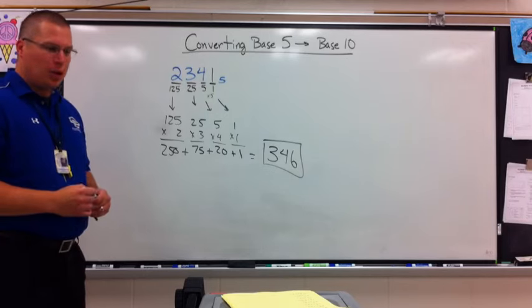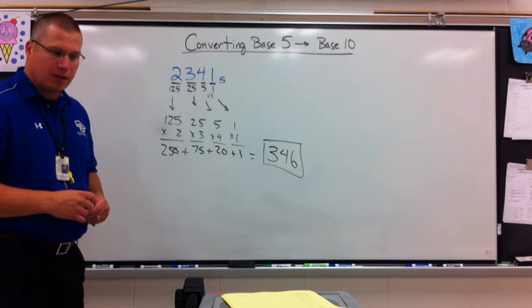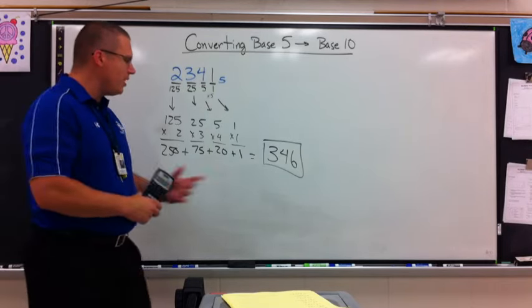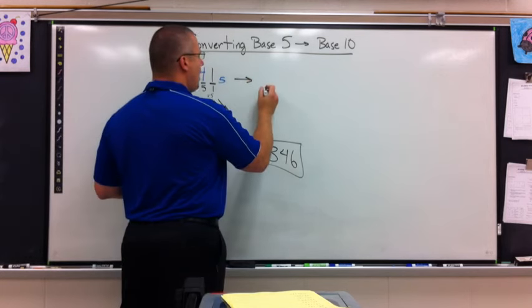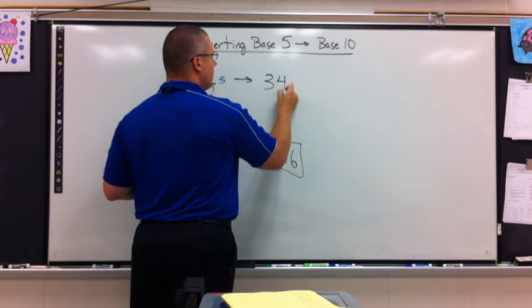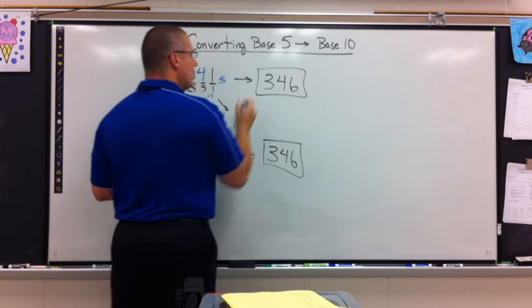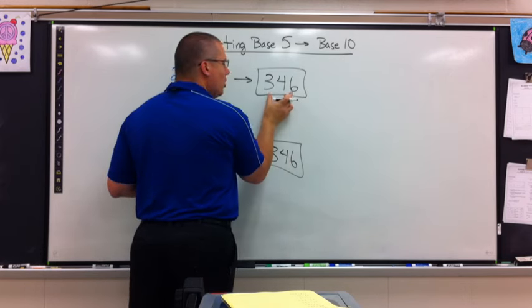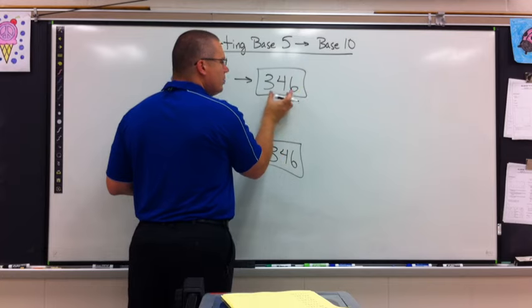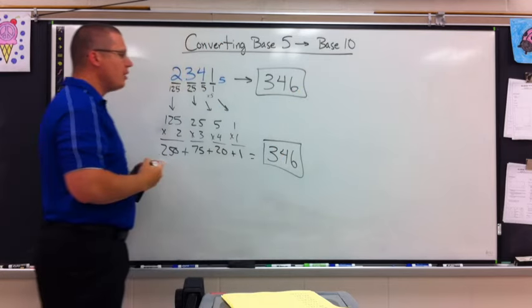Did I read this correctly? 346. Yes, I did, because this is a base 10 number. Remember, we were going from base 5 into base 10. Notice I don't even have to write the little base 10 here. This is our number system. So when there's nothing, we just assume this is 346.